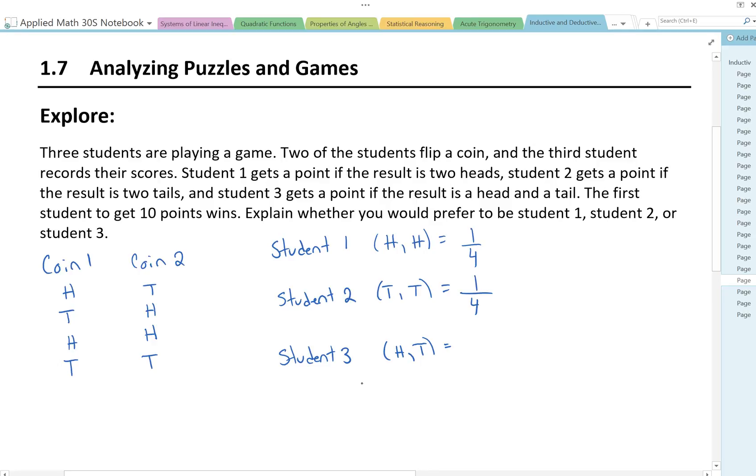So it could be heads, tails, or tails, heads. So in that case there are two possibilities out of four to get the heads-tails combination.